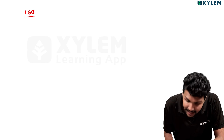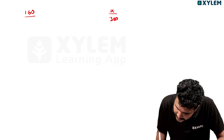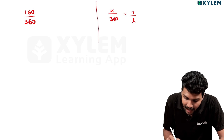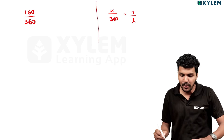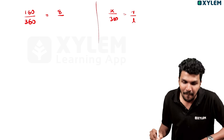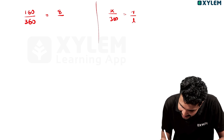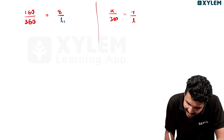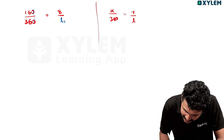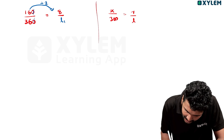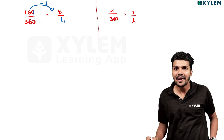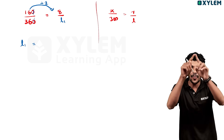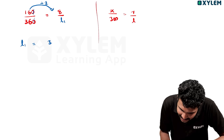The central angle is 160. Our declaration is x by 360 is equal to r by L. This is the central angle. The central angle is 160. Radius is 8. Then L is L1. The central angle is L1. It is 4. The central angle is L1 equal to the slant height.